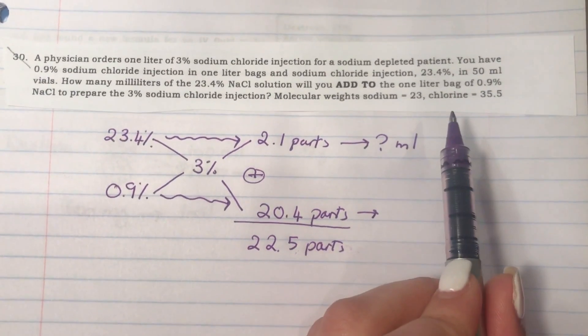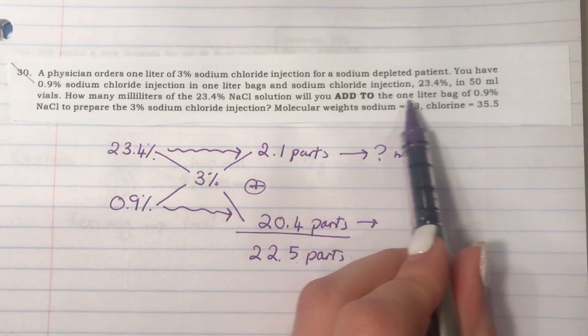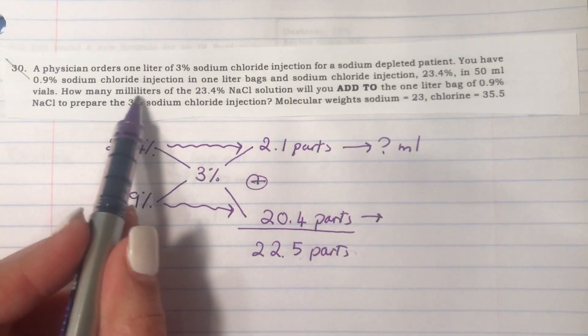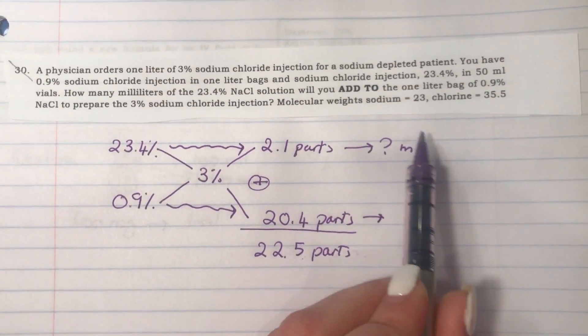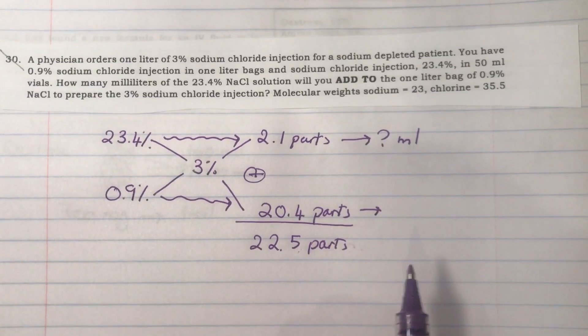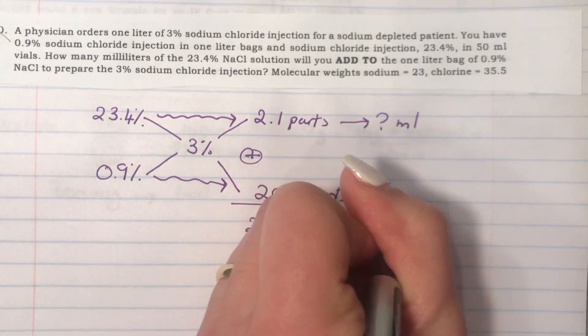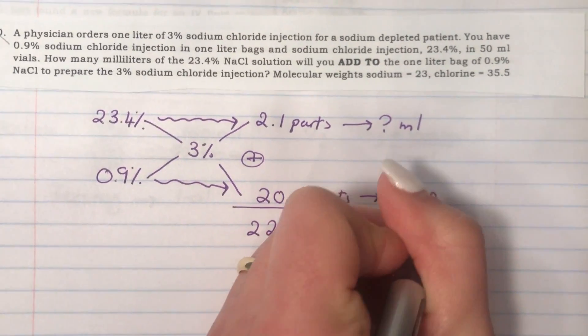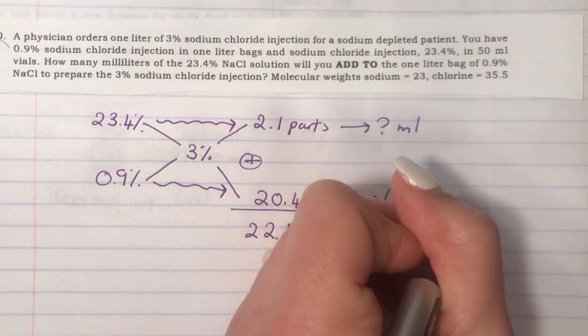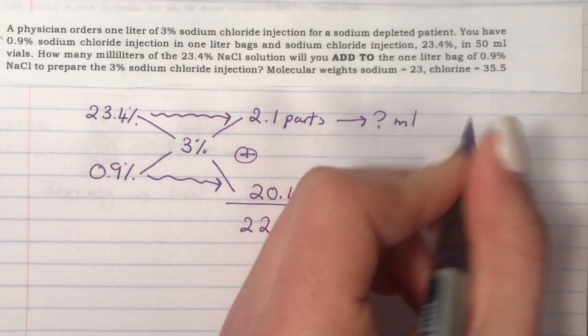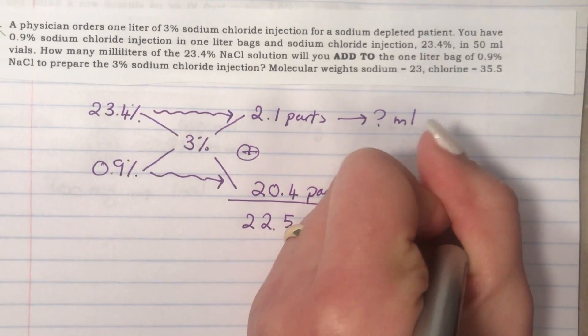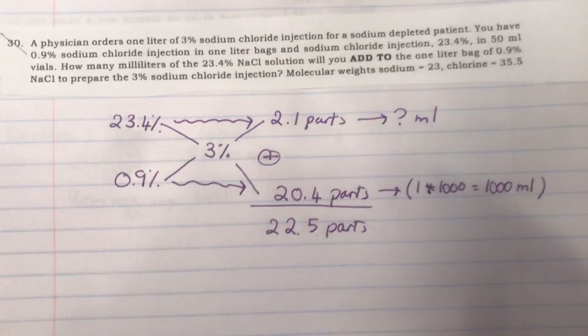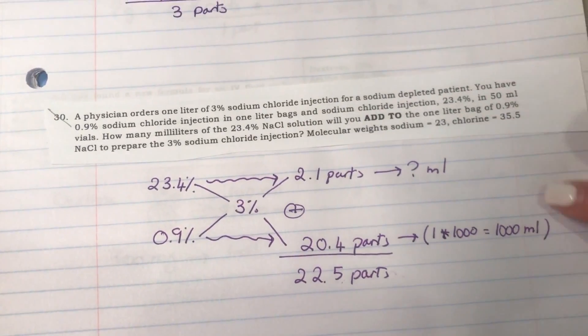Be very careful here with the units. You have a one liter bag and you want to get the milliliters of the 23.4%. That is why you always have to write the units. You will need to convert the one liter into milliliters, and that will equal 1000 mL. Now you have the units matching.